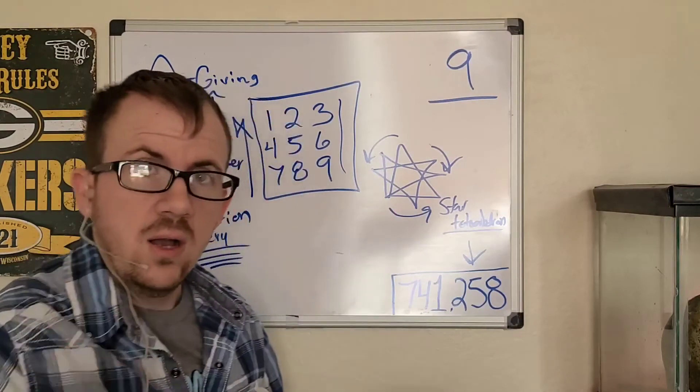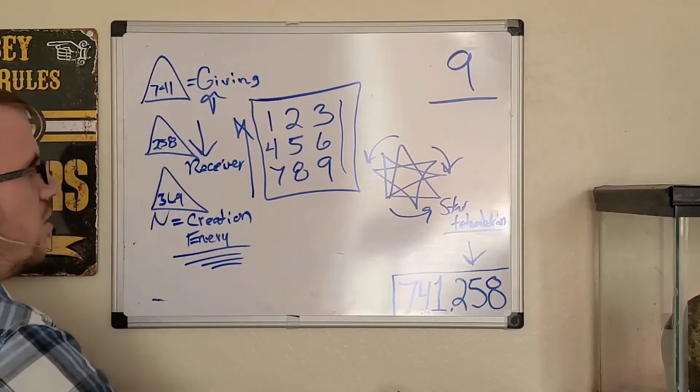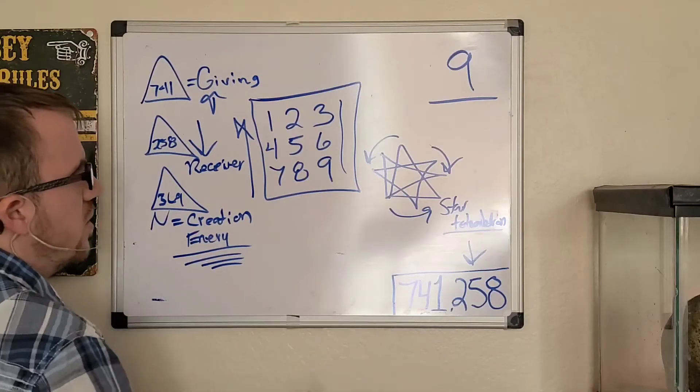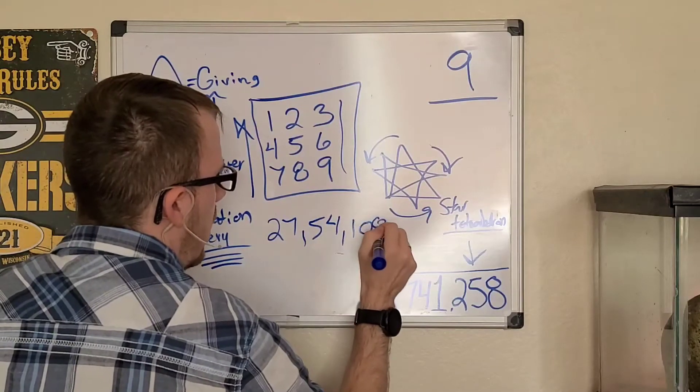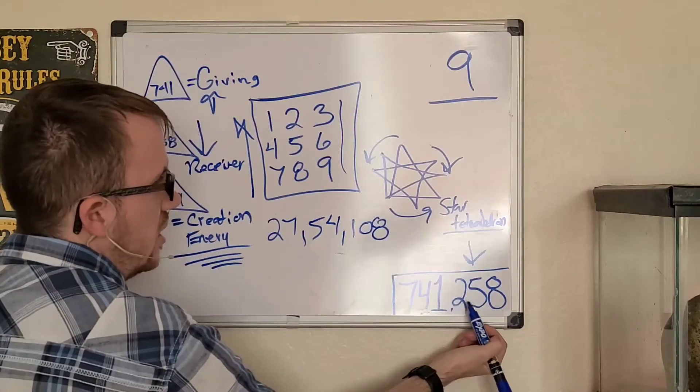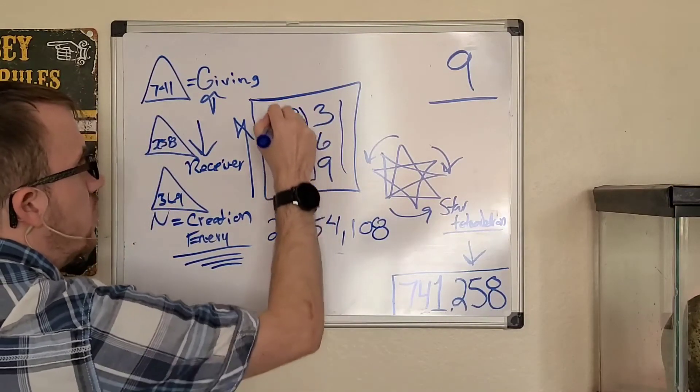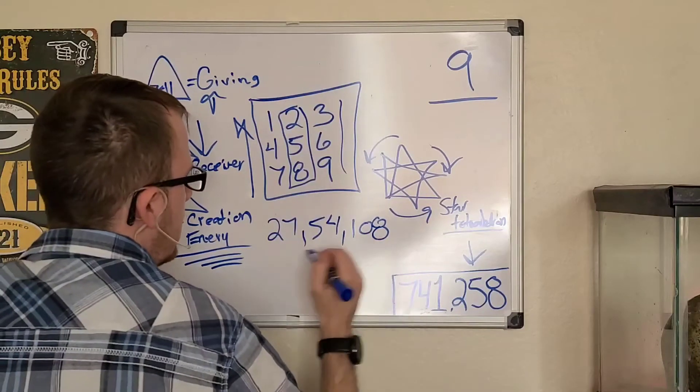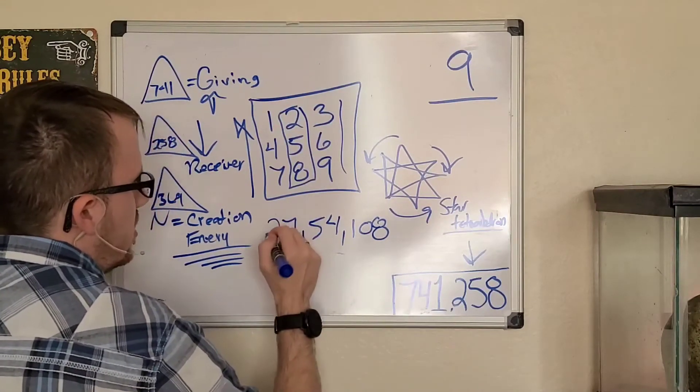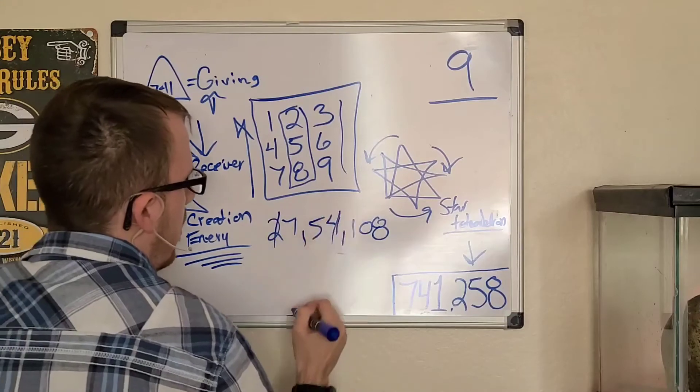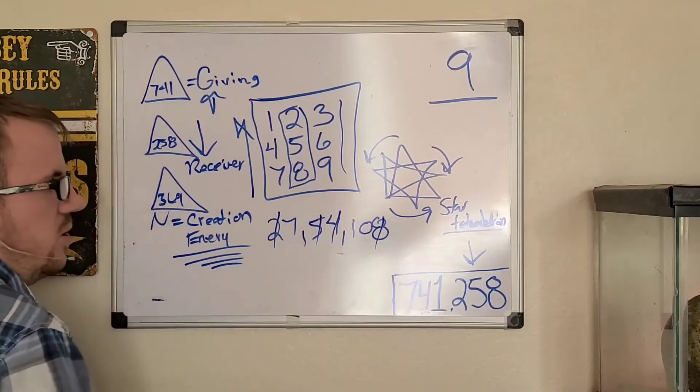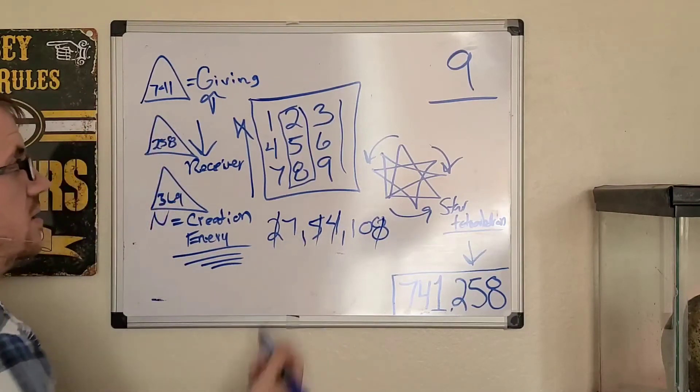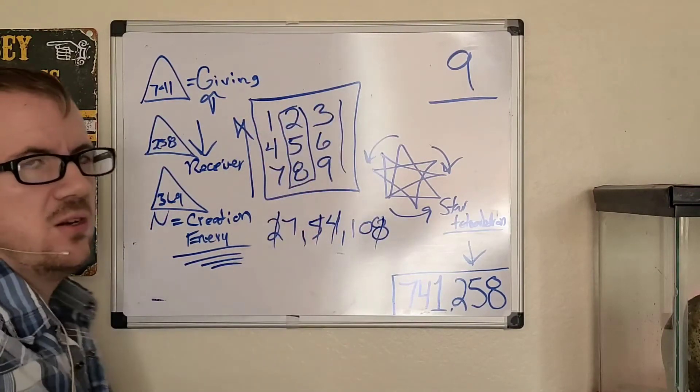So let's sum up really quick. The three most holy numbers are 27, 54, and 108. And when you take 258, which is on your cell phone, and you remove it from this number, you end up with 741. And when you pull the 741 you end up with 258. All this information has been on your cell phone the whole entire time.